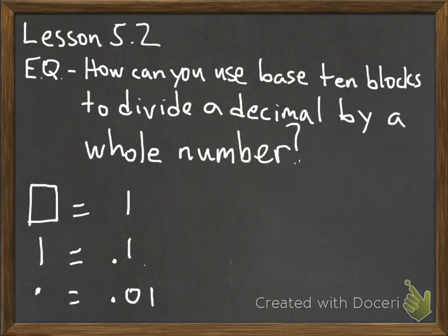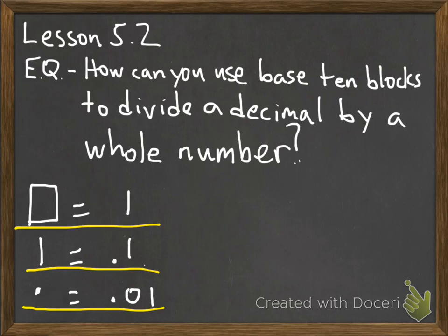Welcome everybody. Here in Lesson 5.2, the essential question is: how can you use base 10 blocks to divide a decimal by a whole number? We're going to have our squares represent one whole, our straight lines represent a tenth piece, and a dot represent our hundredth pieces to model these questions.